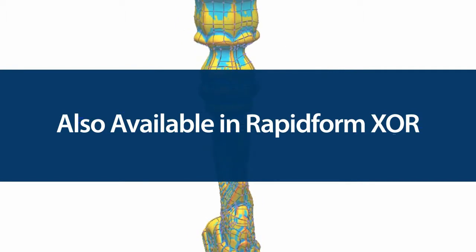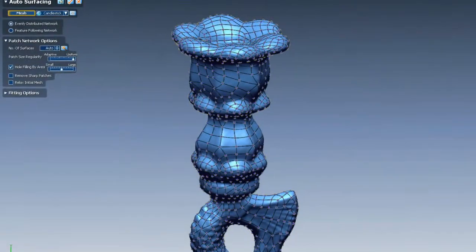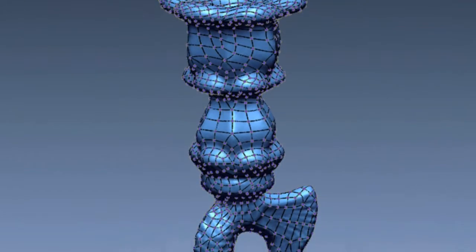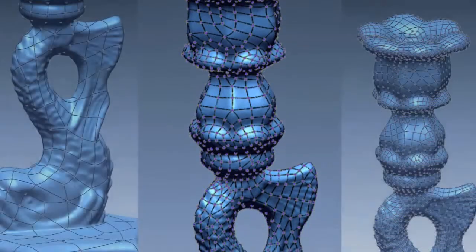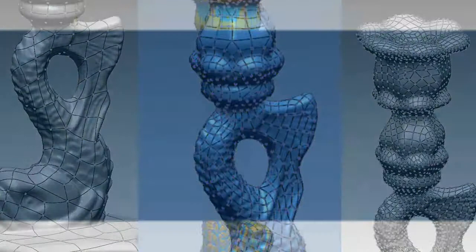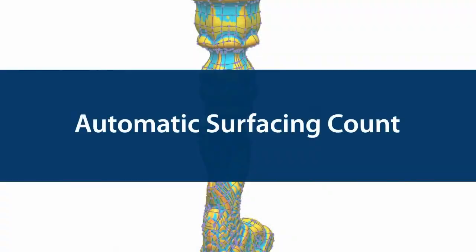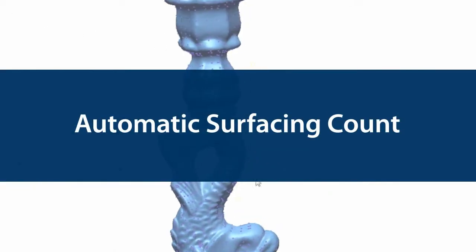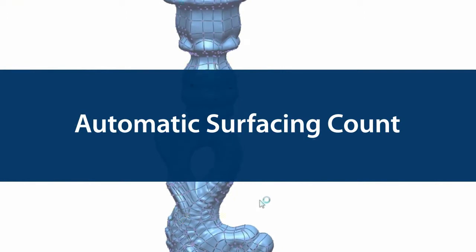There are two methods to create surfaces automatically in RapidForm. With the evenly distributed method, the software will now calculate the optimum number of surfaces to create accurate yet lightweight models. This saves a lot of time because you don't have to try multiple patch counts to find the best number — XOS and XOR do it for you automatically.